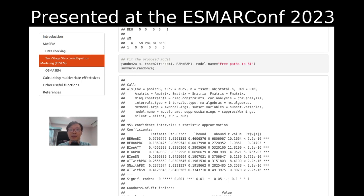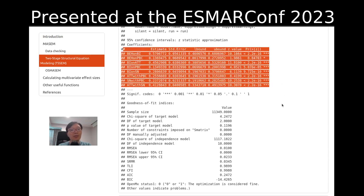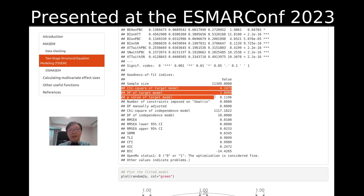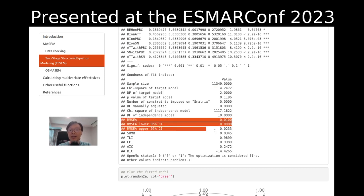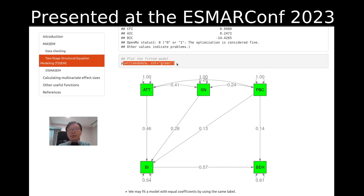Now we can fit our stage 2 model and get the summaries. The outputs are quite similar to standard structural equation models — we have all the labeled elements. We also have various goodness-of-fit indices, for example, the chi-square of the target model, the df and p-values, RMSEA with 95% CI, and other fit indices. We can also plot the model to see how it looks.